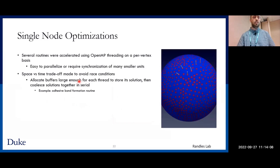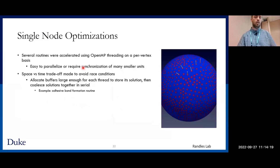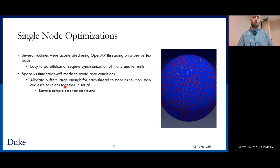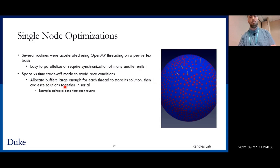For single-node optimizations, several routines in our adhesive dynamics and finite element code were accelerated using OpenMP threading on a per-vertex basis. These represented areas that were either easy to parallelize or required synchronization over many smaller units — specifically the ligands shown as red circles on the cell surface — representing a good opportunity for shared memory parallelism. We made a space-versus-time trade-off to avoid race conditions by allocating enough memory for each thread to individually store its solution, then coalescing those solutions in serial. This approach was used in the adhesive bond formation routine.